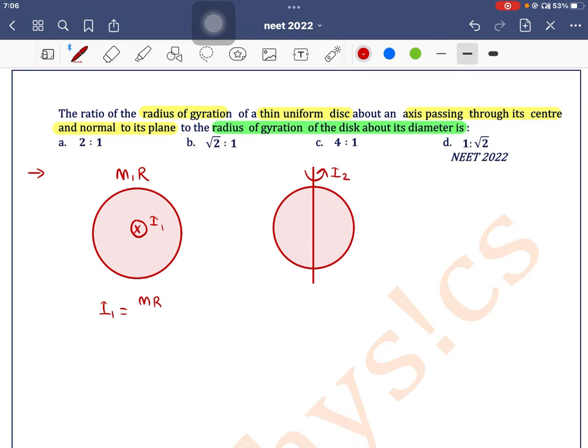We know that for a thin uniform disc, I1 is MR squared by 2. So if you equate this with MK squared, where K is K1, M's cancel out, and K1 equals R divided by root 2. Whenever the axis of rotation is passing through the diameter, we